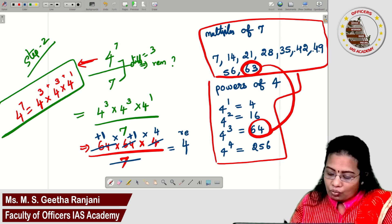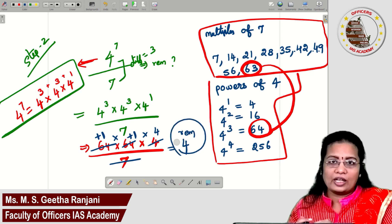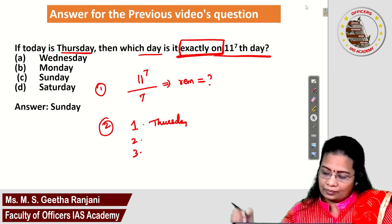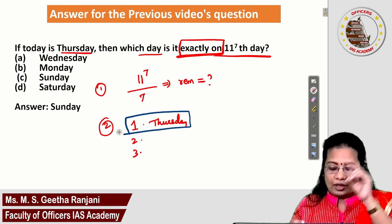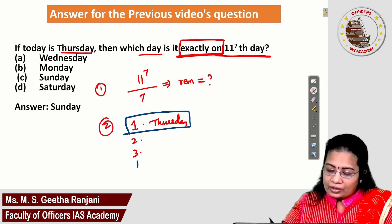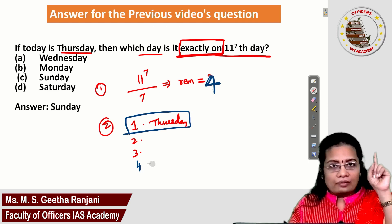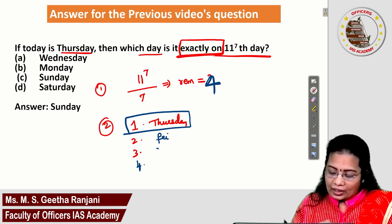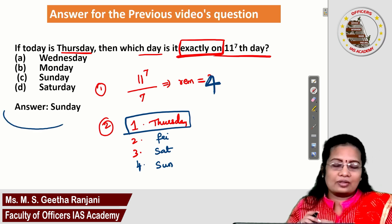Remainder 4 means what? The given day is to be considered as day 1. The remainder we got is 4. Remainder 4 means find the 4th day: 1st day Thursday, 2nd day Friday, 3rd day Saturday, and 4th day Sunday. So the answer for this question is Sunday.